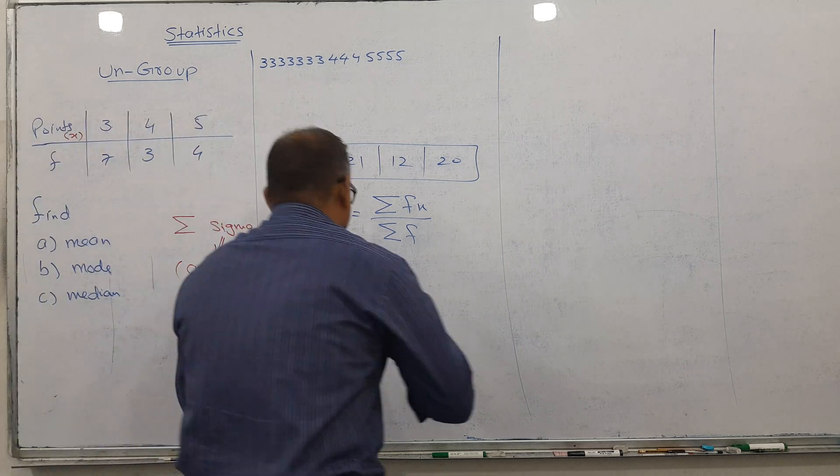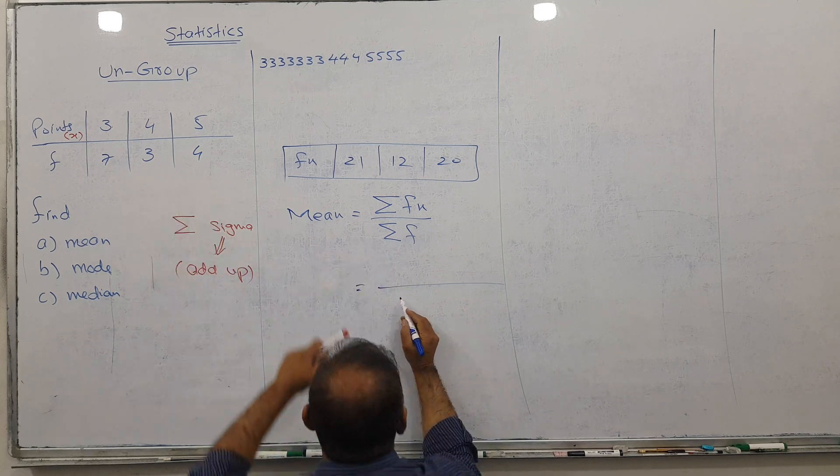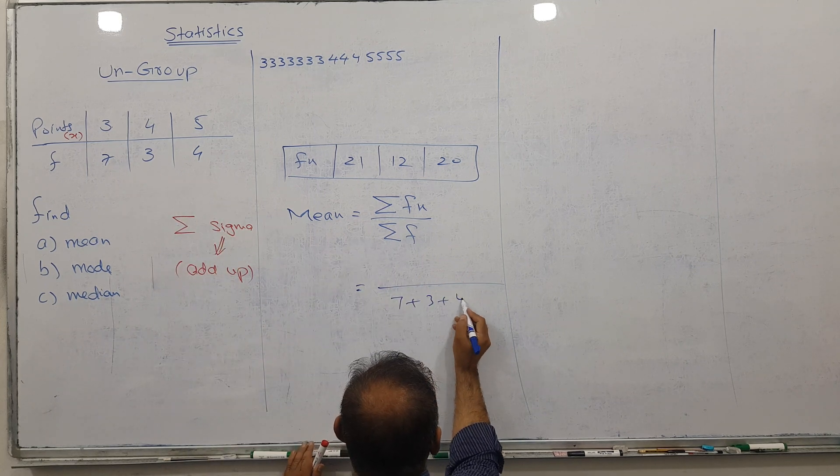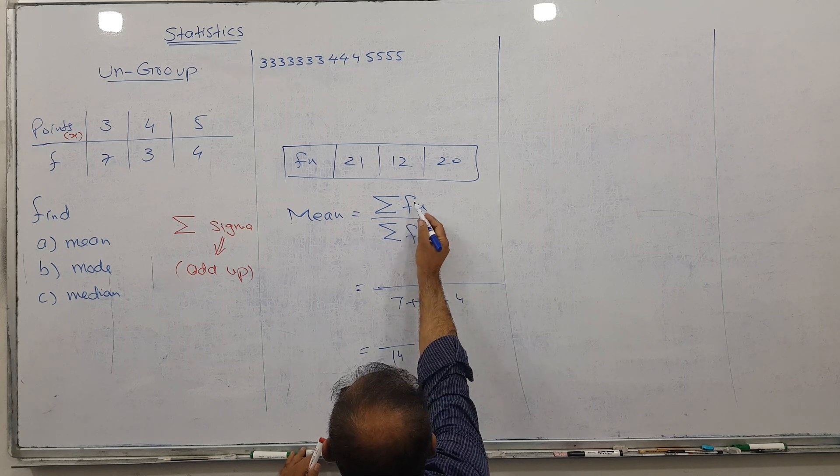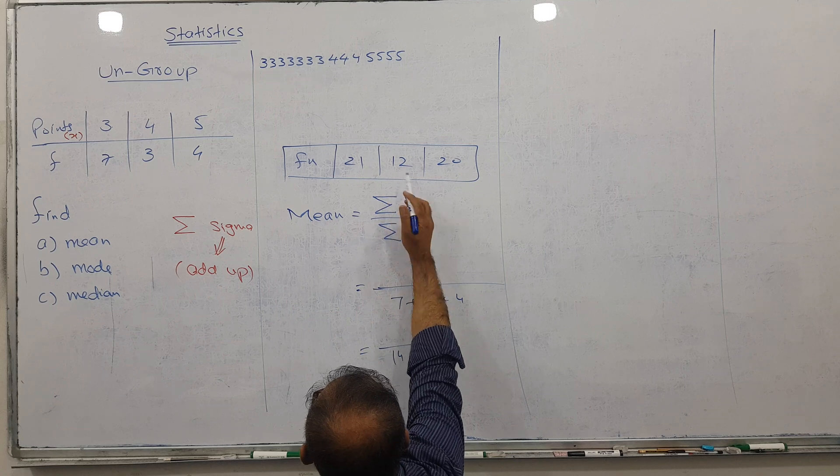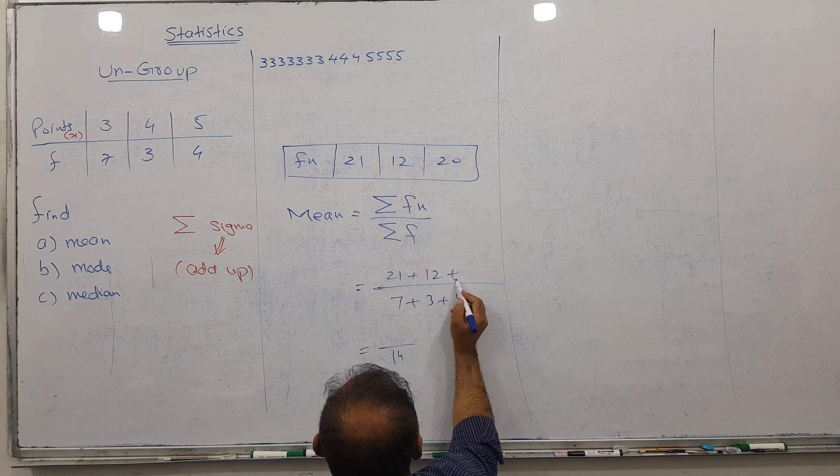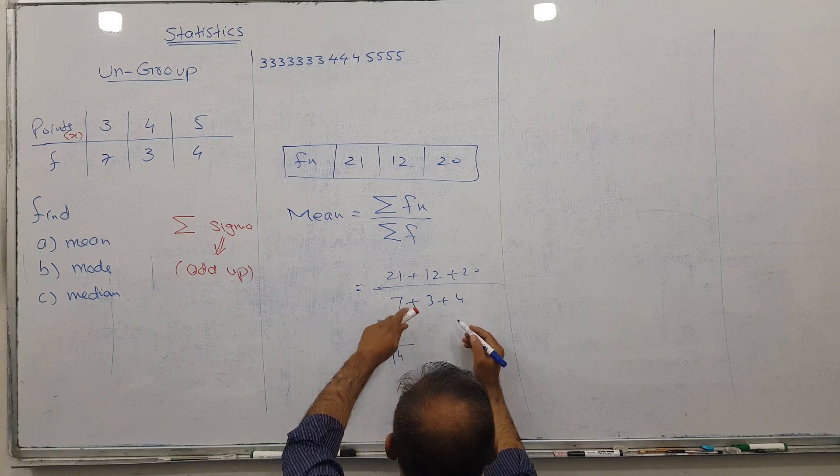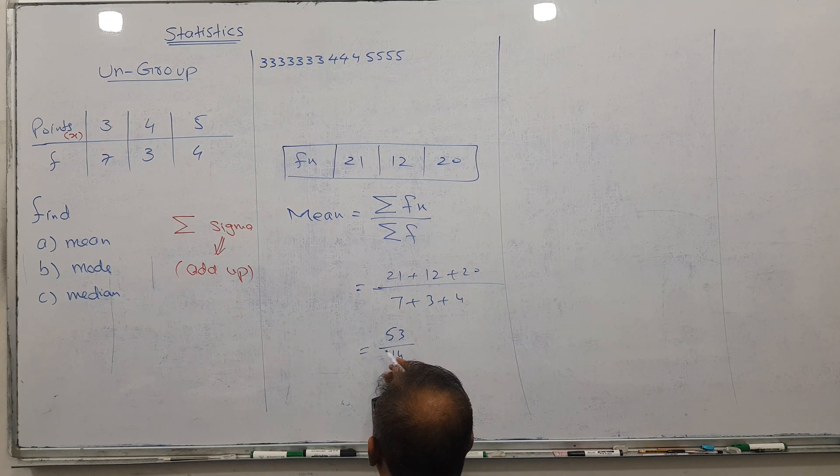Sigma FX means add all the FX values: 21 plus 12 plus 20. I'm getting 32, 33, and 53.